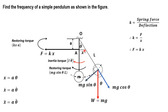x is approximately equal to aθ, so ẋ = aθ̇ and ẍ = aθ̈. Here x is linear displacement, ẋ is linear velocity, and ẍ is linear acceleration in metres per second squared. θ is angular displacement, θ̇ is angular velocity in radians per second, and θ̈ is angular acceleration in radians per second squared.